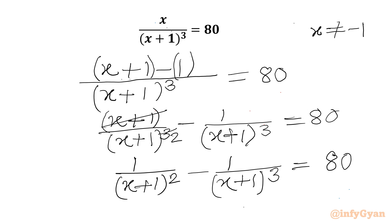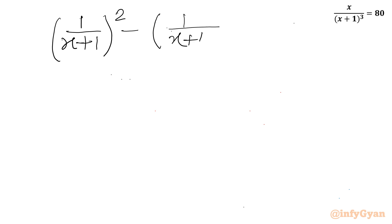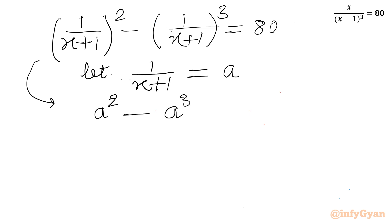Or I can write 1 over (x plus 1) cubed equal to 80. Now the substitution is clear: let 1 over (x plus 1) equal to a. So our equation will become a squared minus a cubed equal to 80.